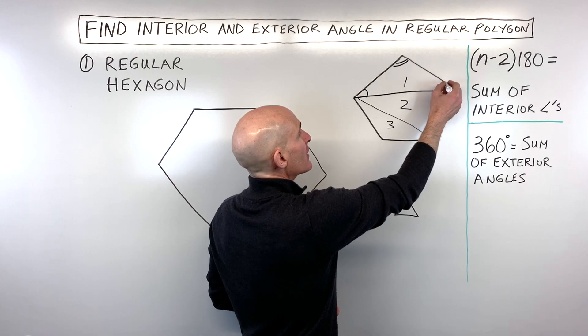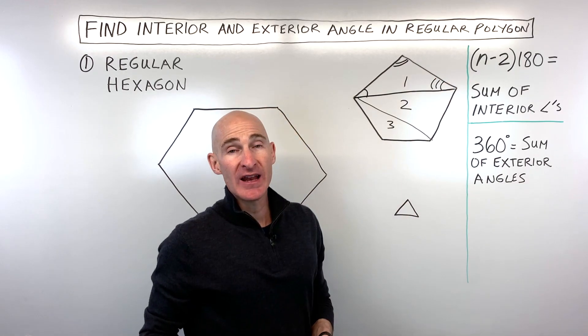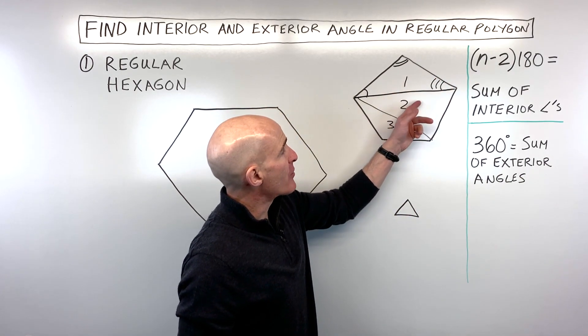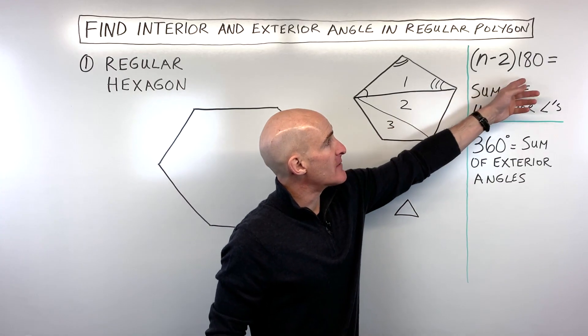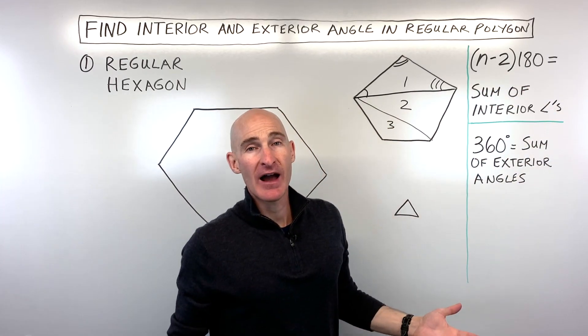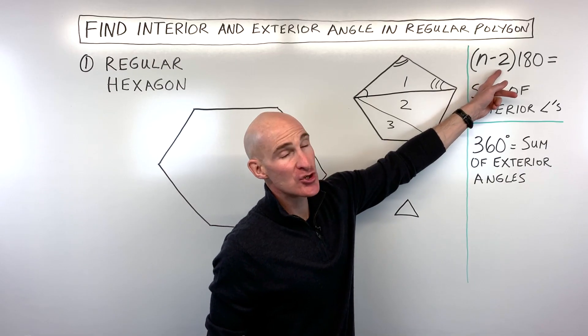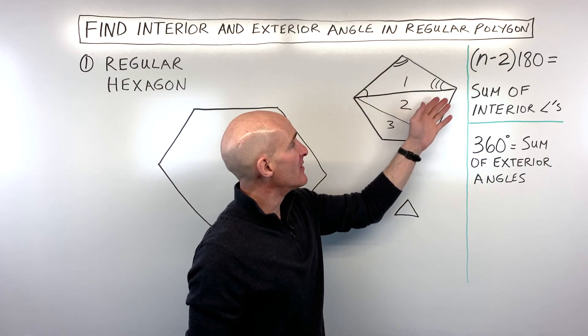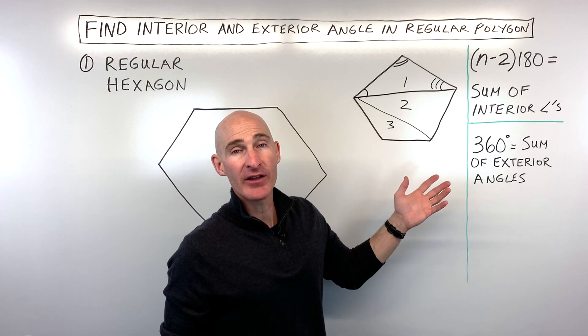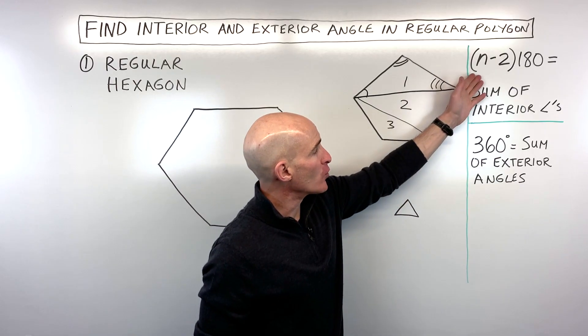And you learned earlier in geometry how in a triangle, all these angles are going to add up to 180 degrees. But if you have three triangles times 180, that's going to be 540 degrees. And so what we're doing is you can see there's always two less triangles than the number of sides in the polygon. So that's why this formula works.